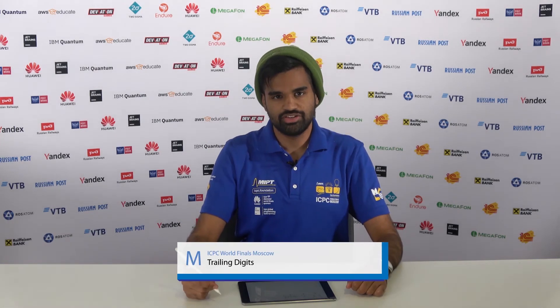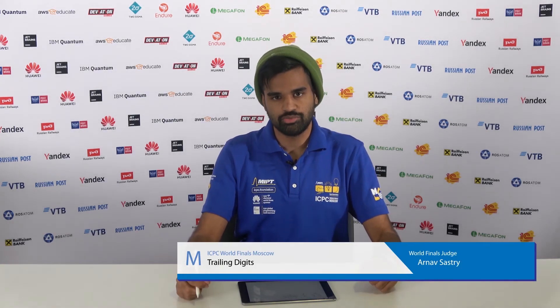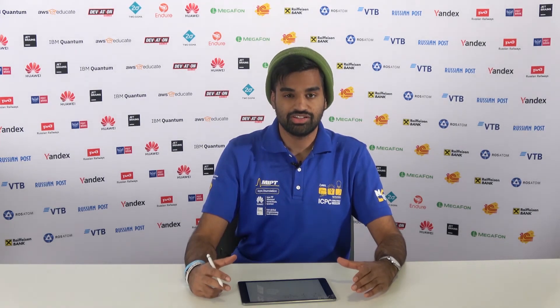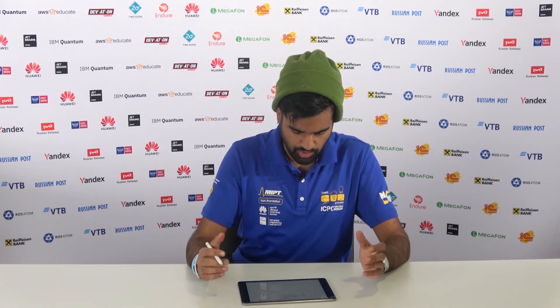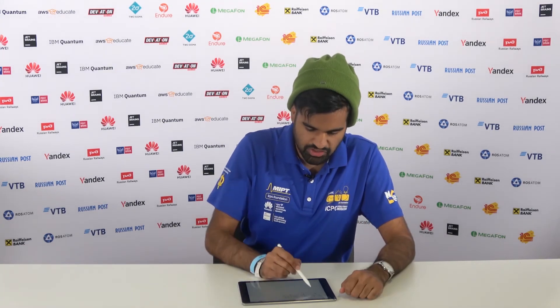Hi everyone, my name is Arnev and I'm a judge here at the ICPC World Finals 2021. I'm here to present the solution to problem M, trailing digits. In this problem, you're given items you want to sell. Each item has a price and you want to sell these items in bundles such that the price of a bundle ends with some specific digit.